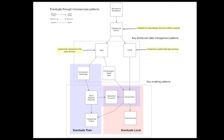You must use the saga pattern to implement transactions that span services. A saga is a sequence of local transactions in each of the services, coordinated using asynchronous messaging. There are two types of sagas: choreography-based sagas, which use events, and orchestration-based sagas, which use asynchronous request-response.